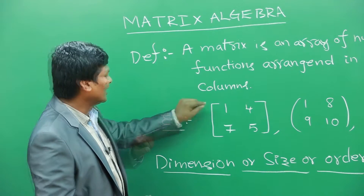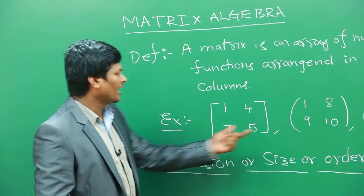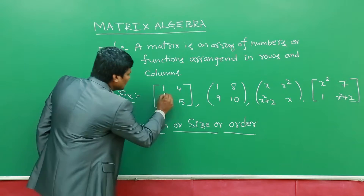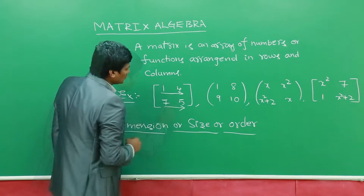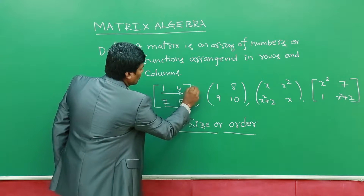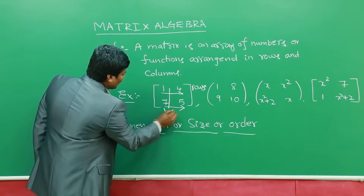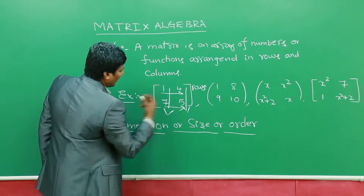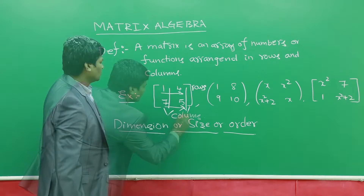Generally we write a matrix in box brackets or in parentheses like this. These horizontal lines we call rows, and these vertical lines — 1, 7, 4, 5 — we call them columns.